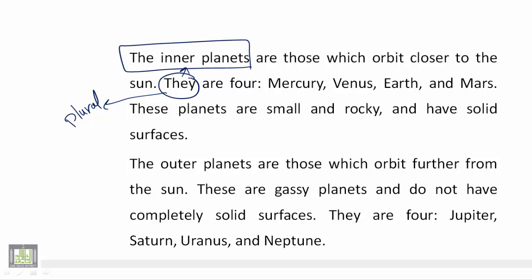Again in the second paragraph, 'these,' again it is plural and it refers to the outer planets. Also we have 'they' and it refers also to the outer planets. This is plural again and you need a plural noun.